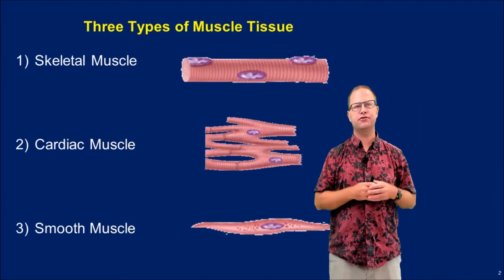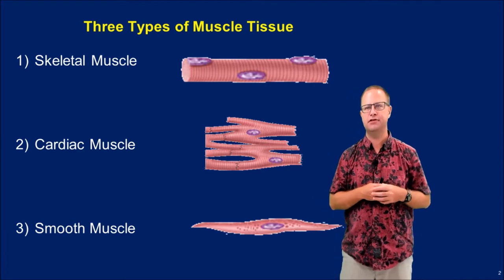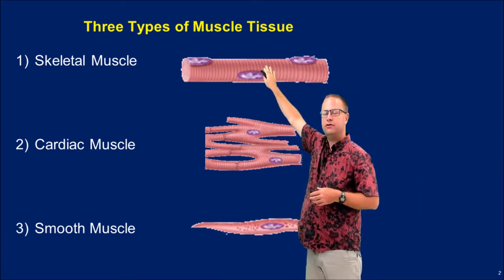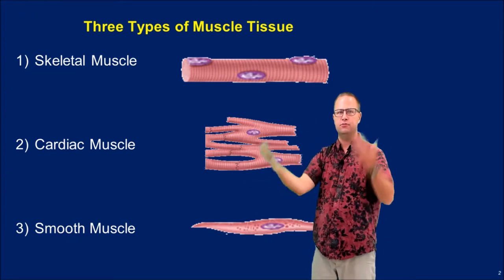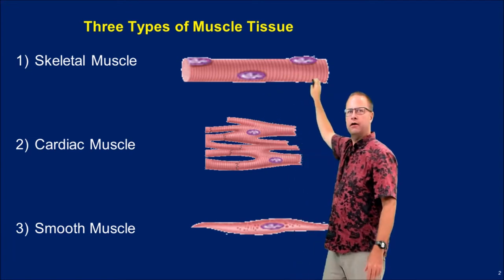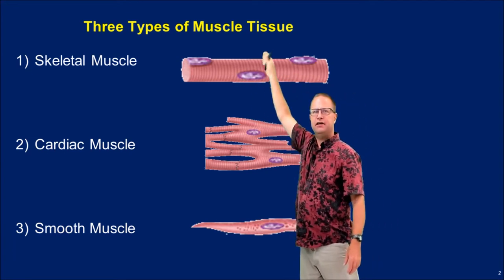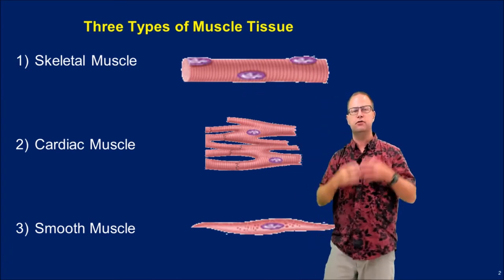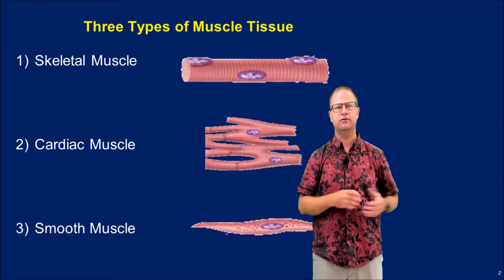If you remember a couple of lectures ago when we were talking about tissues, we talked about three different types of muscle tissue. The first one is skeletal muscle, which is found attached to our skeleton and helps us to move our arms and legs. Skeletal muscle fibers are really long, they have striations, many nuclei — so they're multinucleated — and finally, they're voluntary. We can voluntarily contract skeletal muscle.